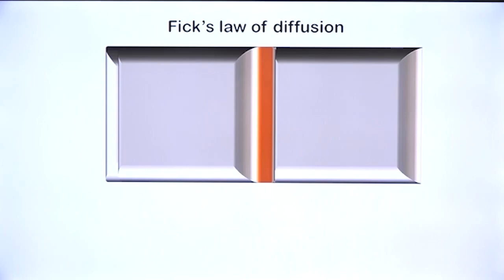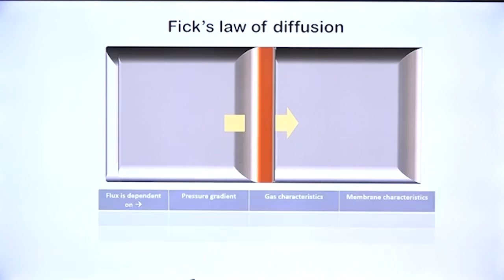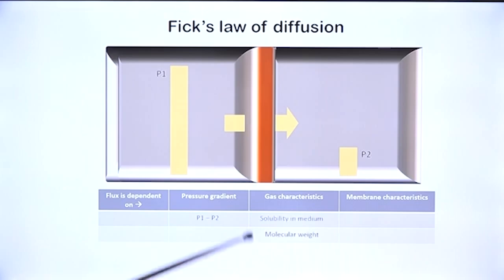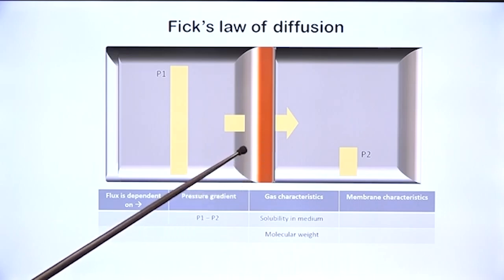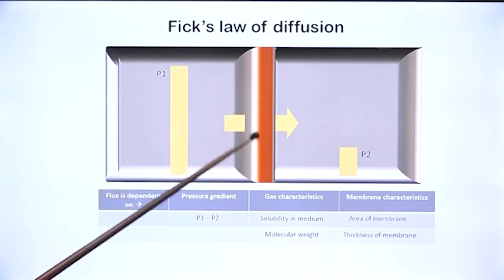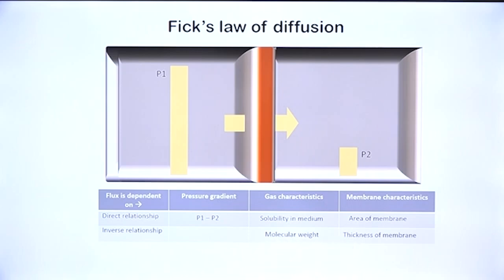Oxygen diffusion is governed by Fick's law of diffusion, as for any gas. The law states that flux of a gas across a diffusion barrier is dependent on the pressure gradient for the gas in the compartments on either side of the barrier, the solubility of the gas in the medium (here the respiratory membrane), and the molecular weight of the gas. Other determinants are the area of the membrane and its thickness. Diffusion is directly proportional to area and solubility, and inversely proportional to molecular weight and membrane thickness.